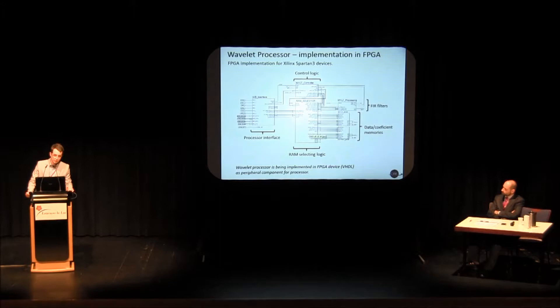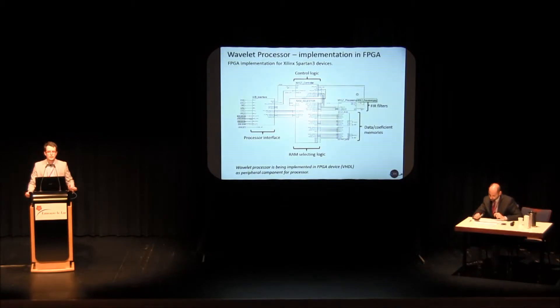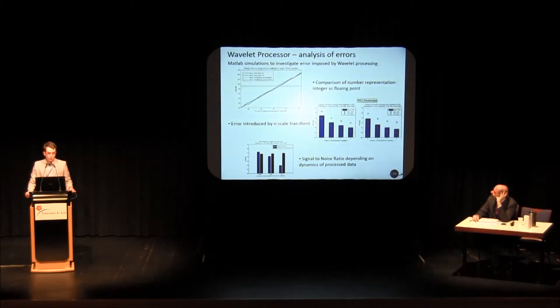Okay, that's the FPGA implementation of wavelet processor. Since it is a peripheral for a software processor, we have the wishbone interface, control logic, memories for the input output data, decimating logic, and the most important wavelet processing, which is done using filters. This is the most efficient way to implement wavelets.